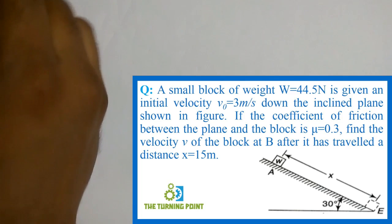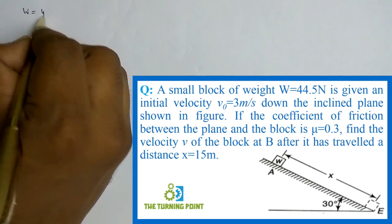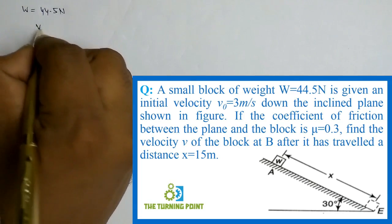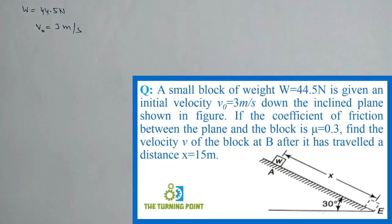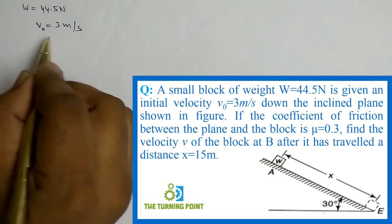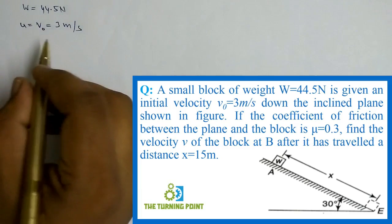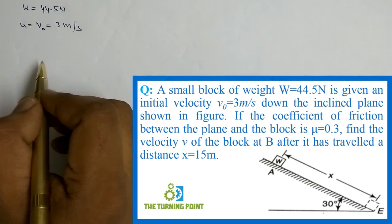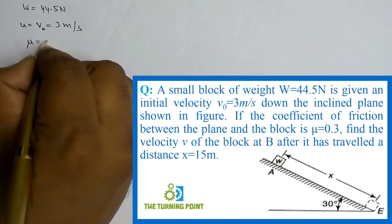A small block of weight w = 44.5 Newtons is given an initial velocity v0 = 3 meters per second — this is the initial velocity, conventionally denoted as u. The initial velocity is 3 meters per second down the inclined plane shown in the figure. The coefficient of friction between the plane and the block is μ = 0.3.